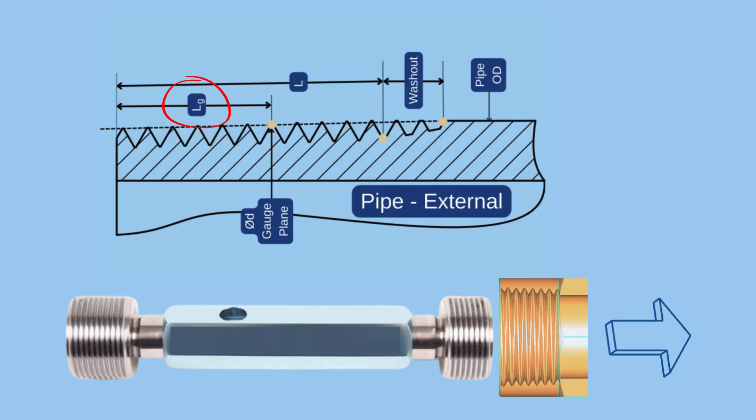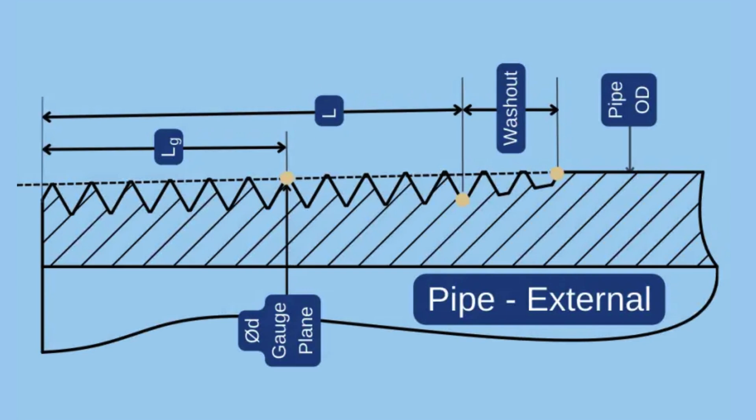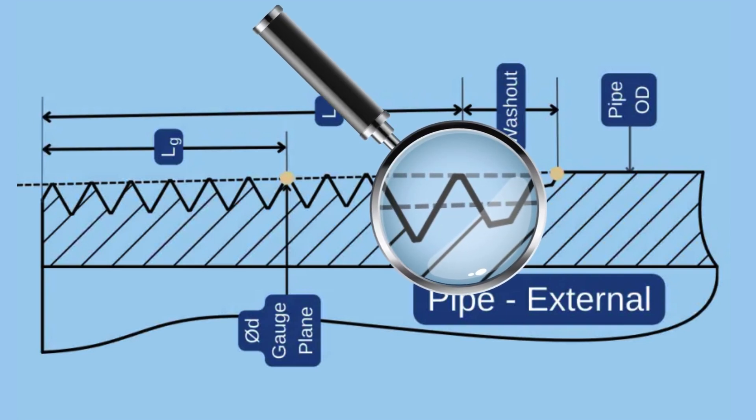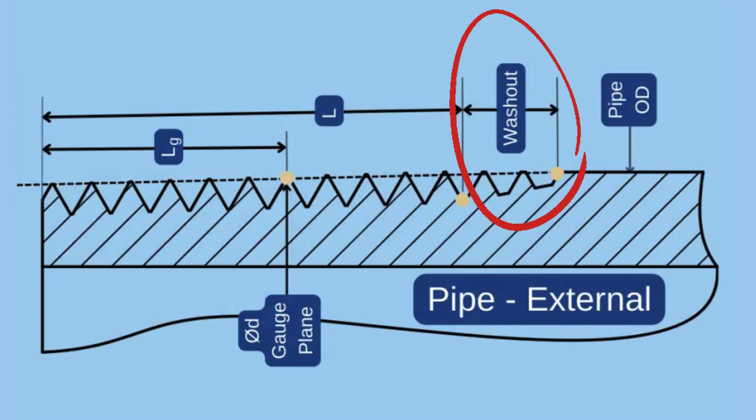The thread length L is the distance to the last useful thread. A thread is considered useful according to the amount of crest truncation. The threads beyond this point are called vanish threads and this area of the thread is called washout.